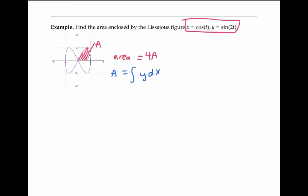And using our parametric equations, we know that y is sine of two t, and dx is the derivative of cosine, so that's negative sine of t dt. The rightmost point of the section of curve that we're interested in happens when x is one and y equals zero. It's easy to check that that occurs when t equals zero.